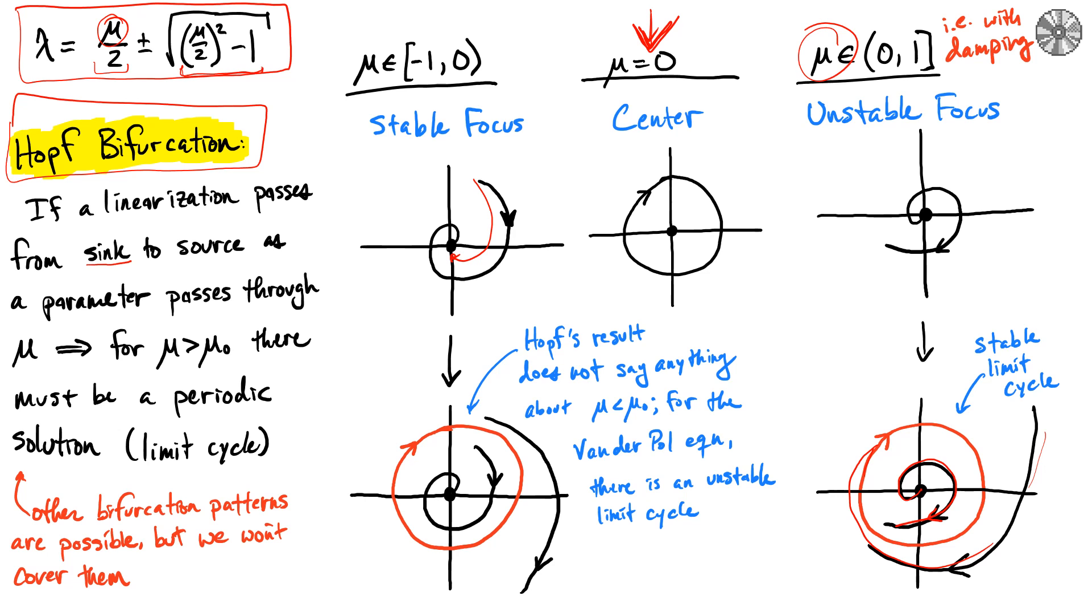This bifurcation theory doesn't actually tell us the rest of this, but the opposite is true when μ is negative: it's an unstable limit cycle. That means if you deviate slightly off of this trajectory, then you start going into this spiral—stable spiral in—or if you leave slightly off, then it does this spiral and heads outwards.